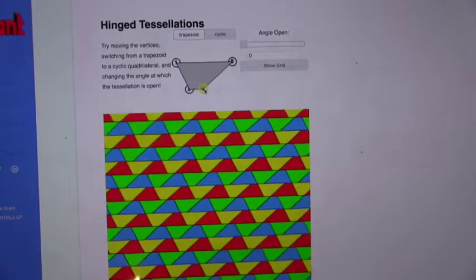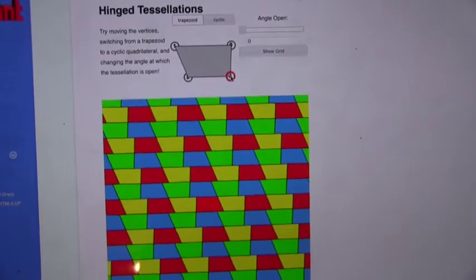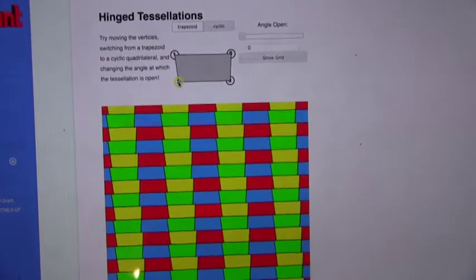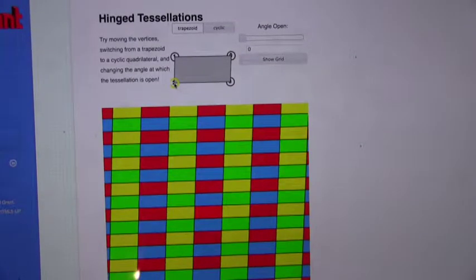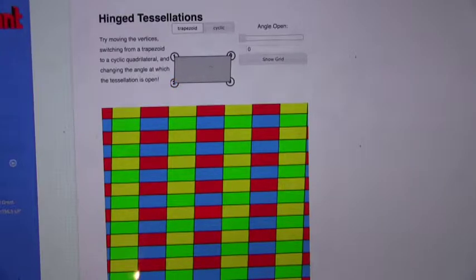So, maybe I can see what happens if I get it almost like a rectangle. Okay. This is pretty close, and angled open.